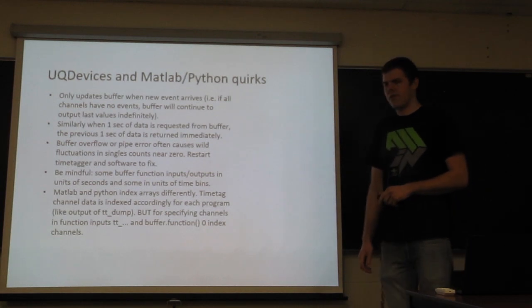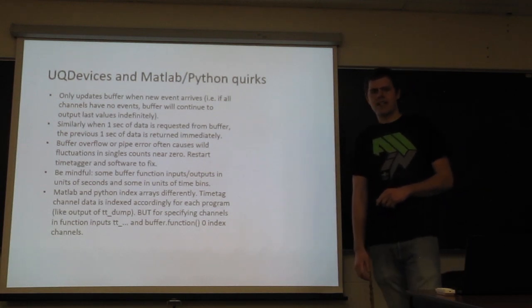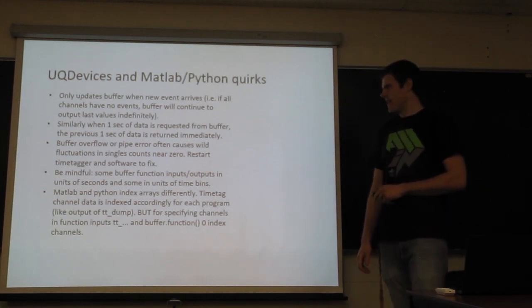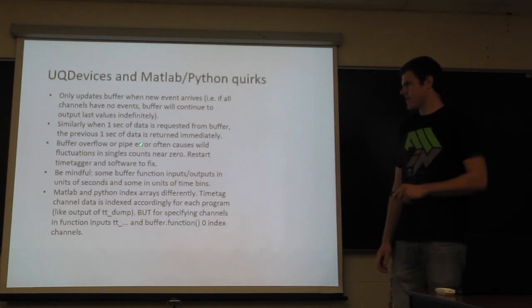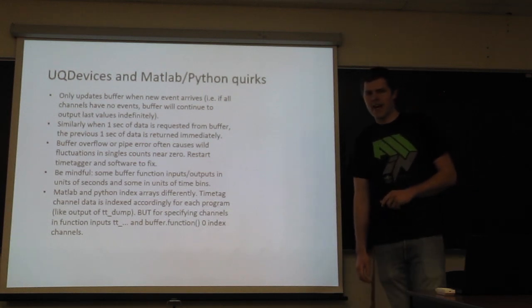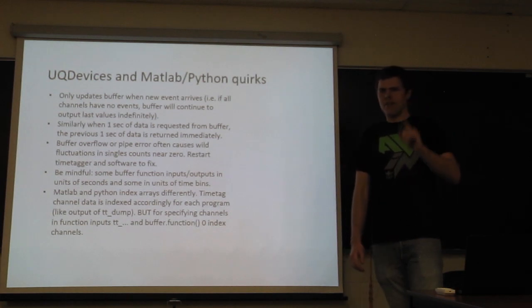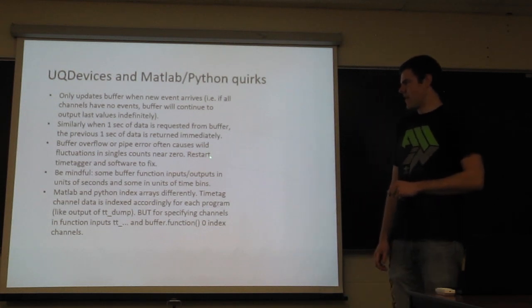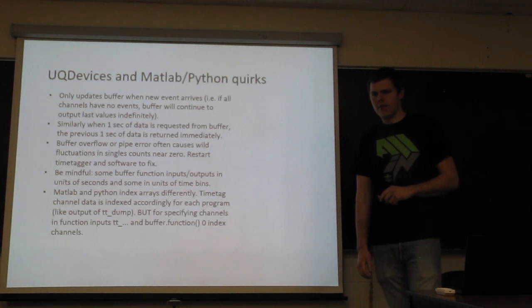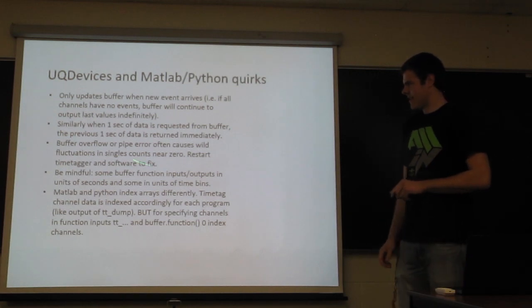Finally, if you're looking at the singles and coincidences and then all of a sudden there's very wild fluctuations of the counts, especially if they're jumping from zero and then up to some high value, that's usually lower than what they were before. I've seen that often because of a buffer overflow or one of these errors. And so that's where you should stop. Stop touching things in your experiment. Nothing's wrong. And restart the time tagger.